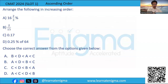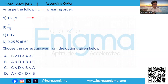Arrange the following in increasing order. We are given four values and have to arrange them in ascending order — starting with the smallest and going up to the biggest value. Let's convert all four values into decimal percentage form. 16 and 2/3 gets converted to 16.66 percentage for option a.